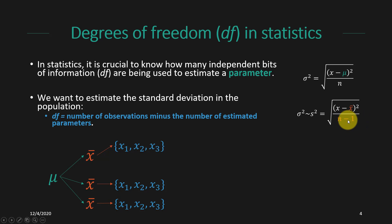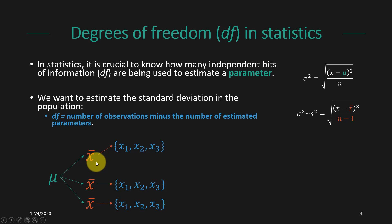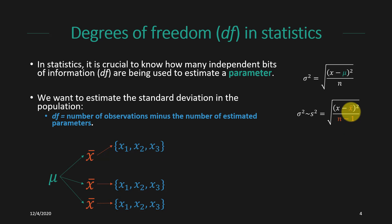Why is this n minus one? The degrees of freedom are based on the number of observations minus the number of estimated parameters. There is some hypothetical true population mean mu, but in each of our samples we don't know mu — we just get x-bar and use it as our unbiased estimate of the population mean. So in each sample I have to use x-bar rather than mu in order to calculate the variance or the standard deviation.